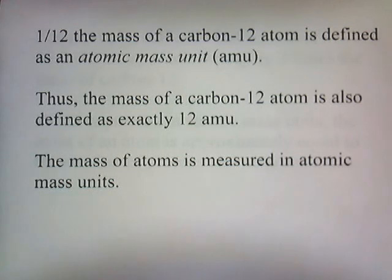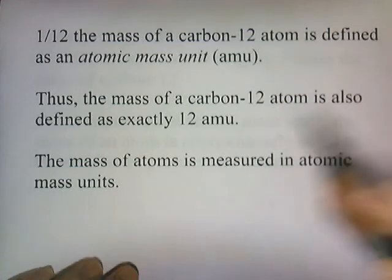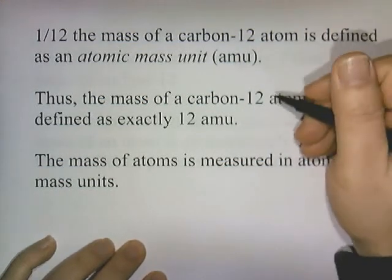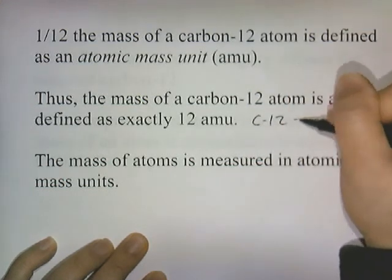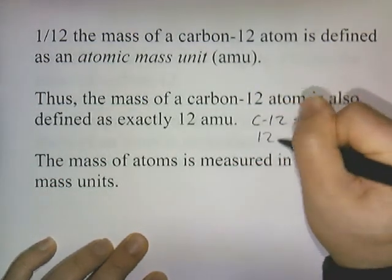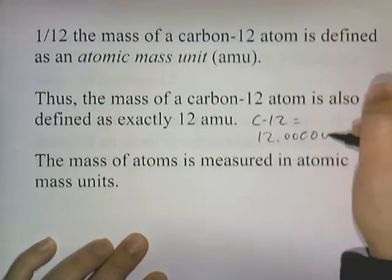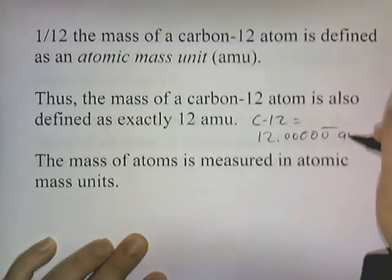The mass of atoms is measured in atomic mass units. So what they did was they took the carbon-12 atom and said, by definition, carbon-12 has a mass exactly equal to 12.0000 all the way out to infinity atomic mass units.